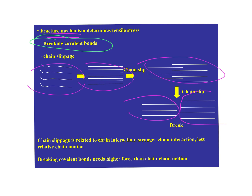When you think about polymer fracture, it's a spectrum. If things go fast, you might actually break covalent bonds; if things go slowly, the only thing you're breaking is secondary bonds, and eventually chains just slide away from each other. Related chain interaction means stronger chain interaction means less relative chain motion. More cross-linking means less relative chain motion. Higher molecular weight means more entanglement, which means less relative chain motion. Breaking covalent bonds requires higher force than chain-chain motion. If you give it time, chain-chain motion will always win.